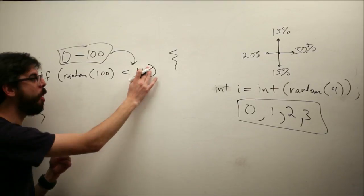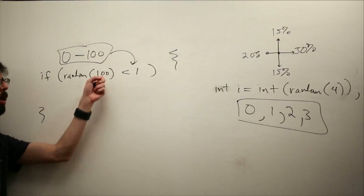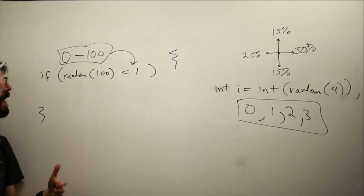Well, 1, or less than 1, 1% of the time. Well, we could also say random 1 less than 0.01. Same thing.